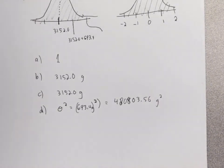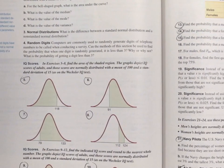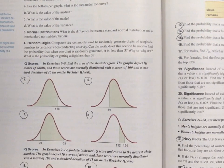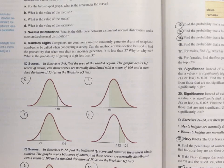Number four asks about random digits. Computers are commonly used to randomly generate digits for telephone numbers when conducting a survey. Can the methods of this section be used to find the probability that when one digit is randomly generated it is less than three? Why or why not, and what is that probability?